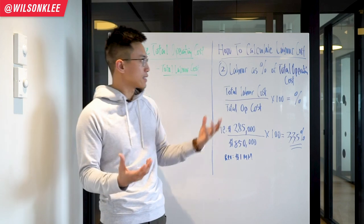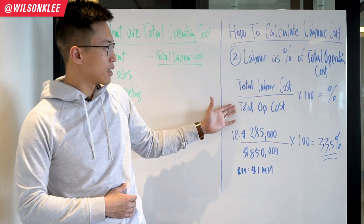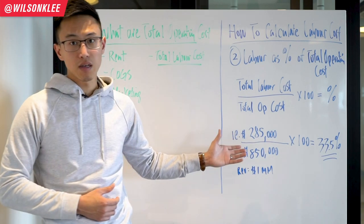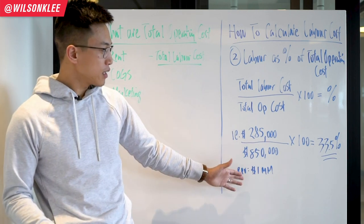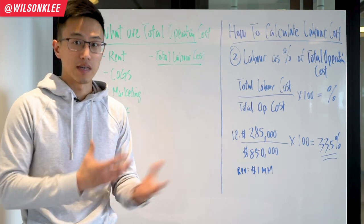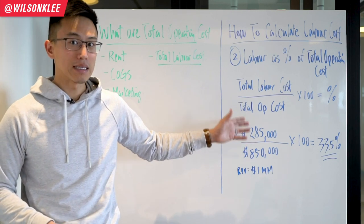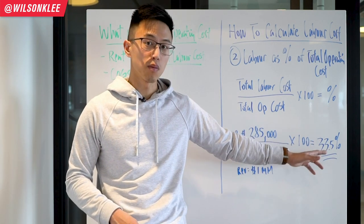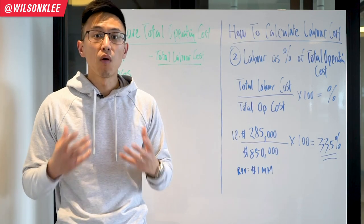How do you calculate that percentage? Divide the total labor costs by the total operating costs, times a hundred — that equals your percentage. Using the same example: a revenue of a million dollars for a restaurant over the course of the year. Out of the million dollars, $850,000 is our operating costs of running the whole restaurant. And out of the $850,000, $285,000 is our labor costs. You divide that by the total operating costs times a hundred to get your percentage invested in operating labor costs.